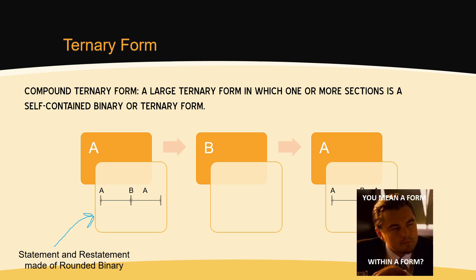These forms are easy to spot because of the text 'da capo' that occurs on the score. The idea of statement, contrast, restatement was already evident in rounded binary form, in which the small transitional B section offered contrast to the opening A section. It was expanded in ternary form as the B section became its own self-contained unit. The idea of statement, contrast, restatement is expanded even further in sonata principles that govern the composition of sonata form.